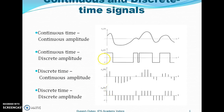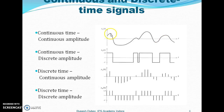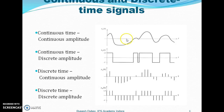This is a continuous time, continuous amplitude signal. We have a signal available at every instant of time, and we also have signal values available between two fixed limits. After a given instant, the signal can take on any value between these limits.